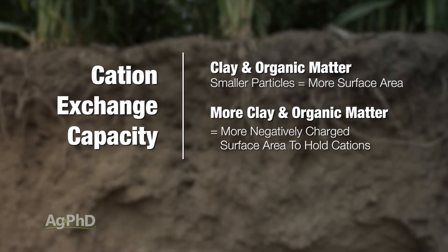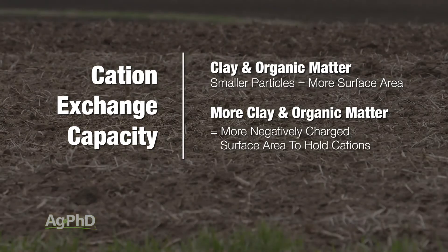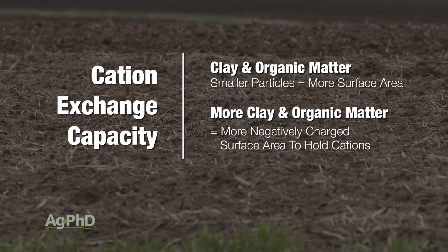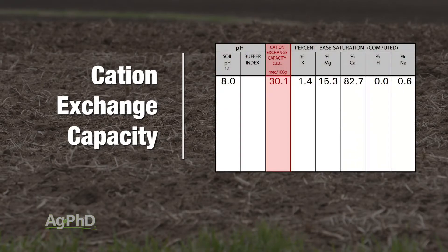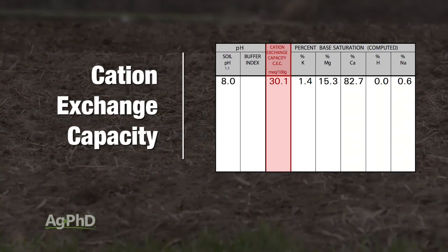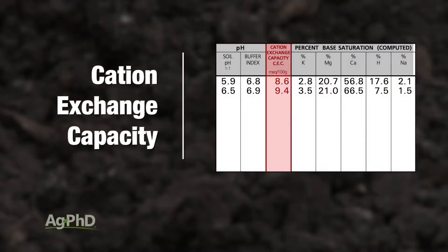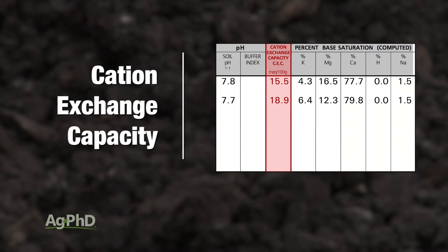When you have a soil that's high in clay and high in organic matter, it's going to have a higher cation exchange capacity number. If a cation exchange capacity number is 20 or higher, we consider that to be a fairly heavy soil. If it's 10 or less, we consider it to be a fairly light soil, and between 10 and 20 would be a medium textured soil.